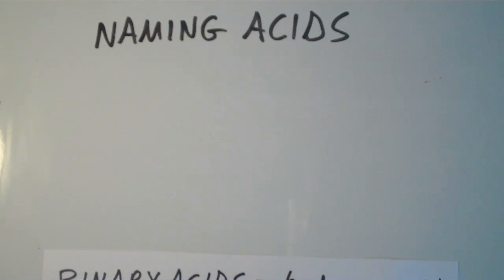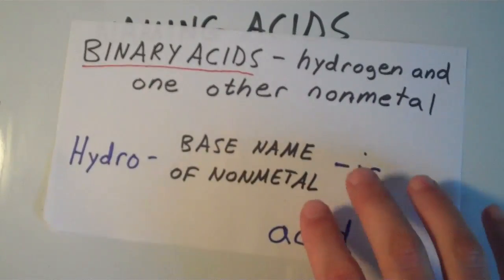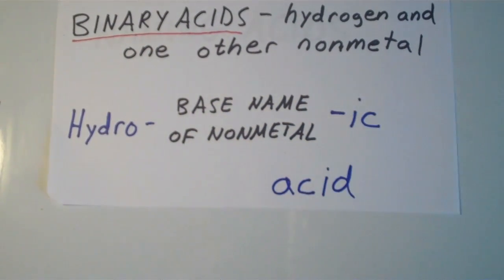Alright, so in this video I'm going to talk about naming acids. Let's start with the acids that are the easiest to name. Those are the binary acids. A binary acid is hydrogen and one other nonmetal.